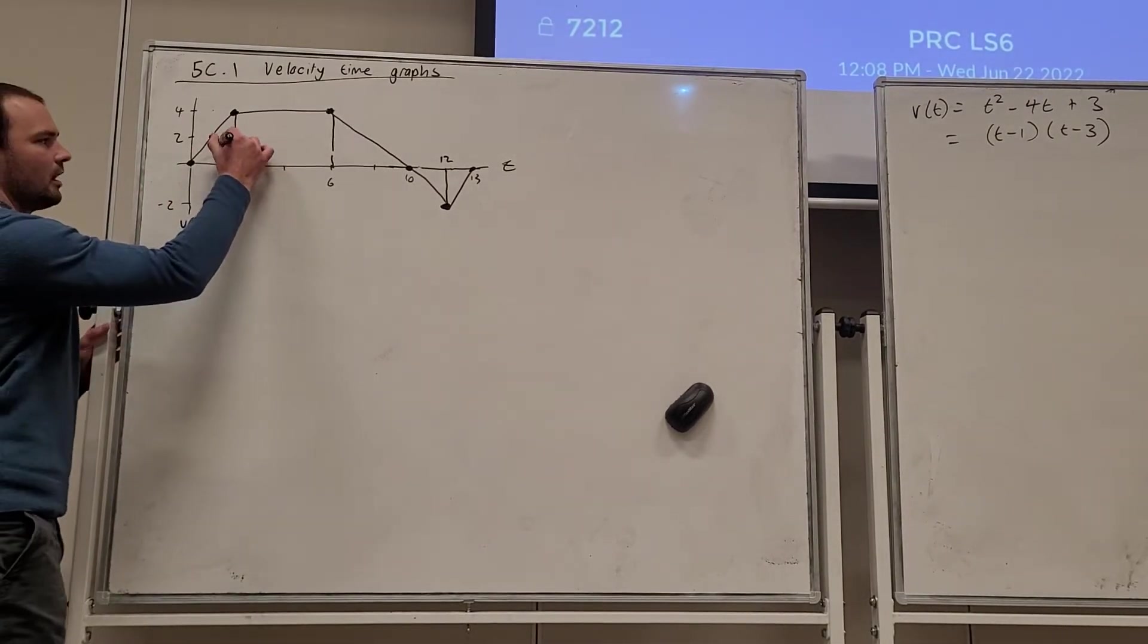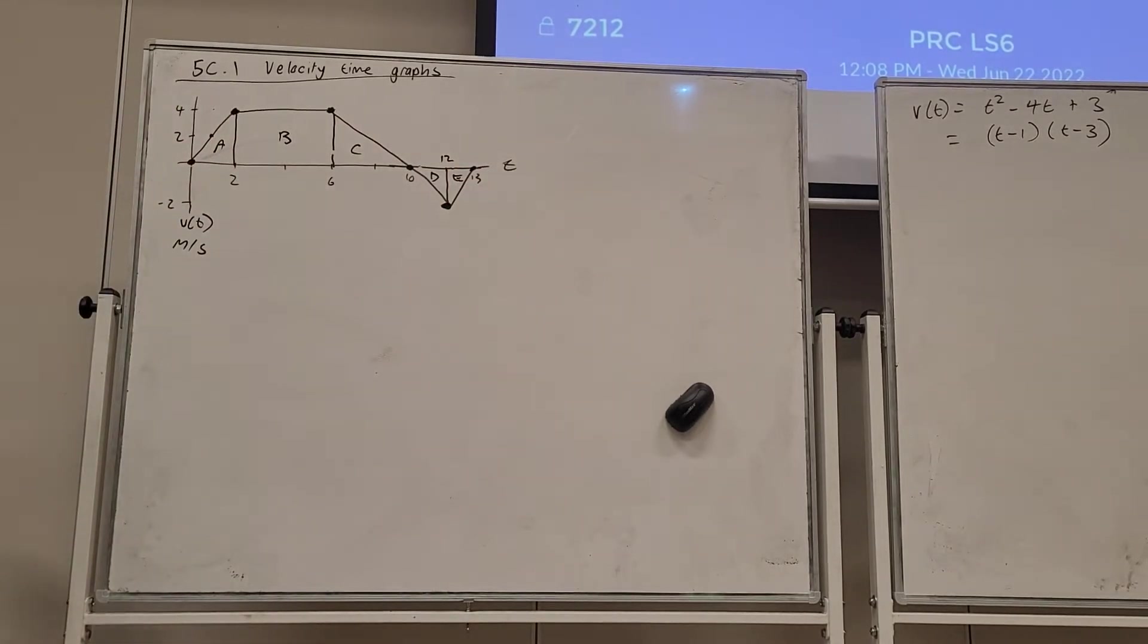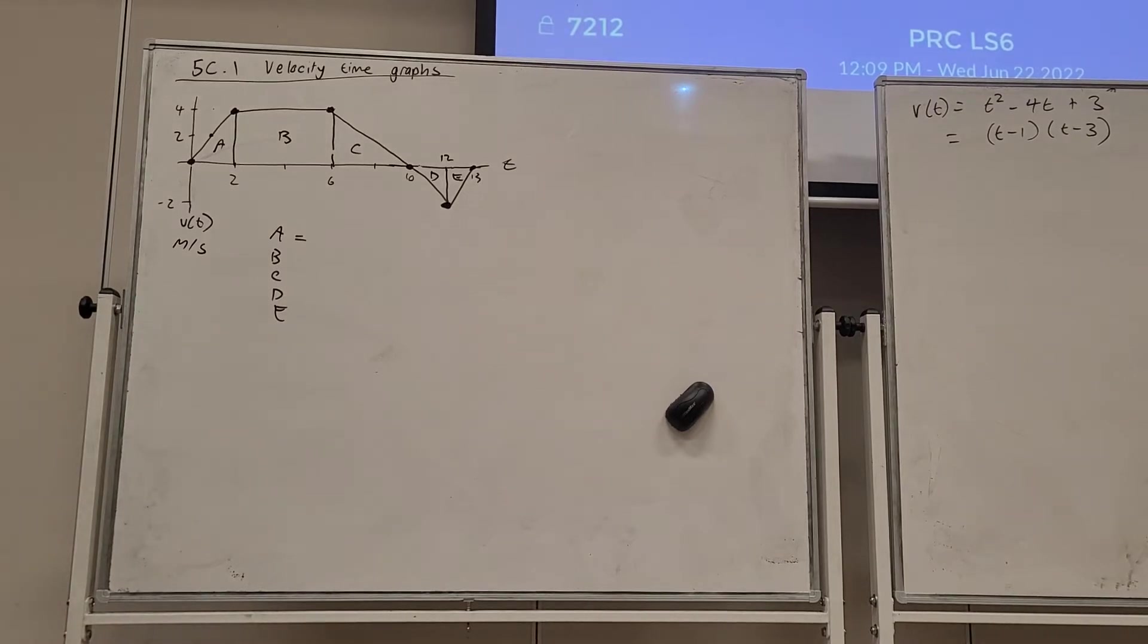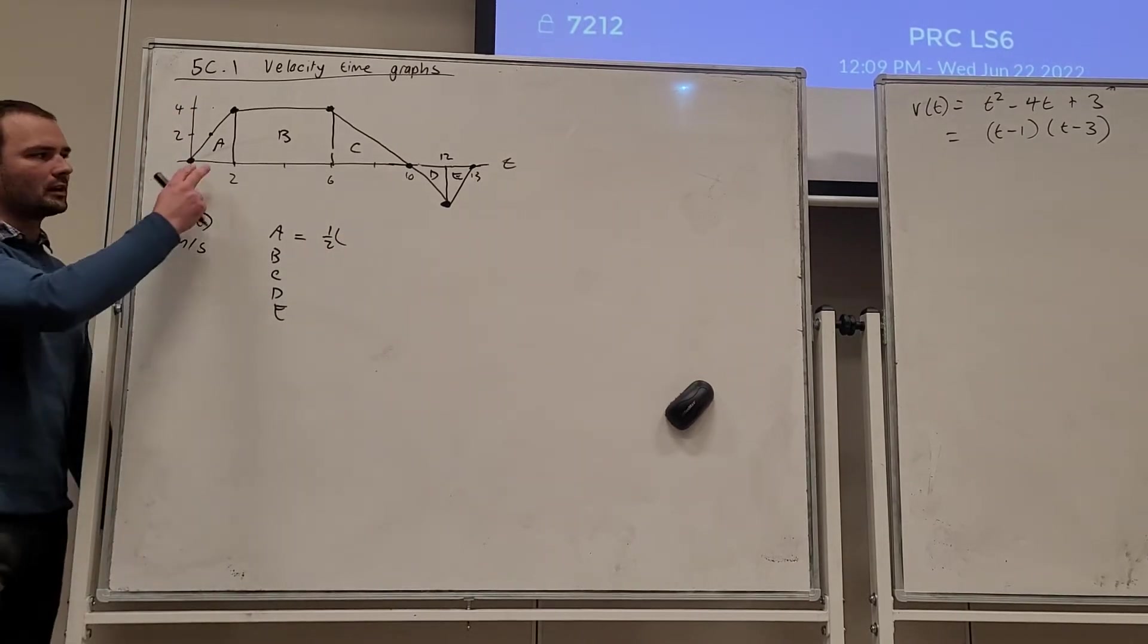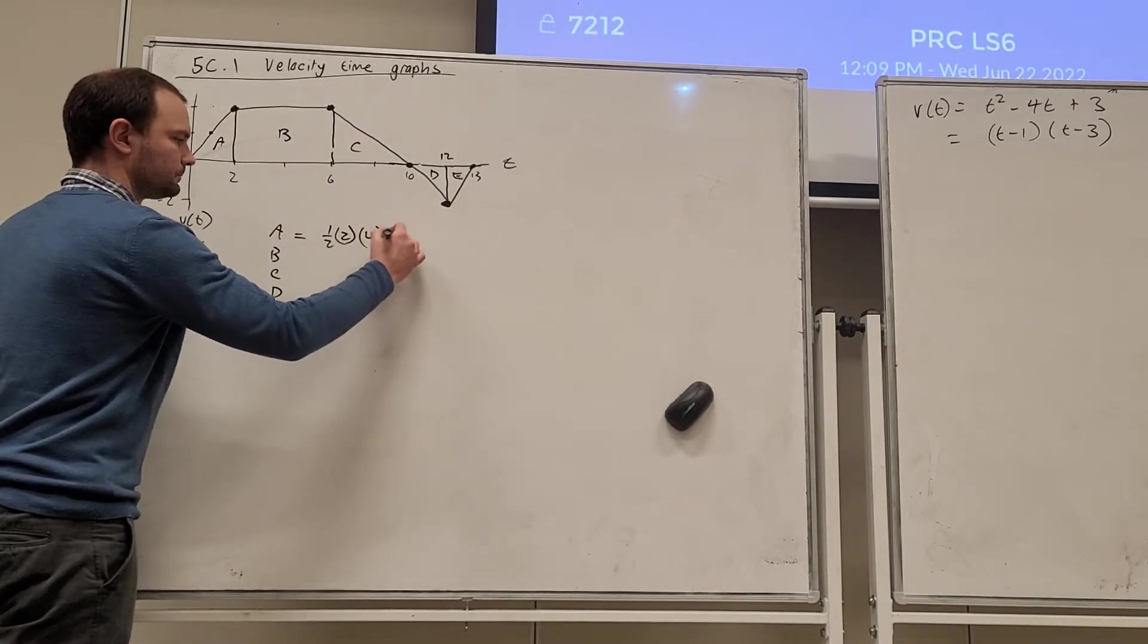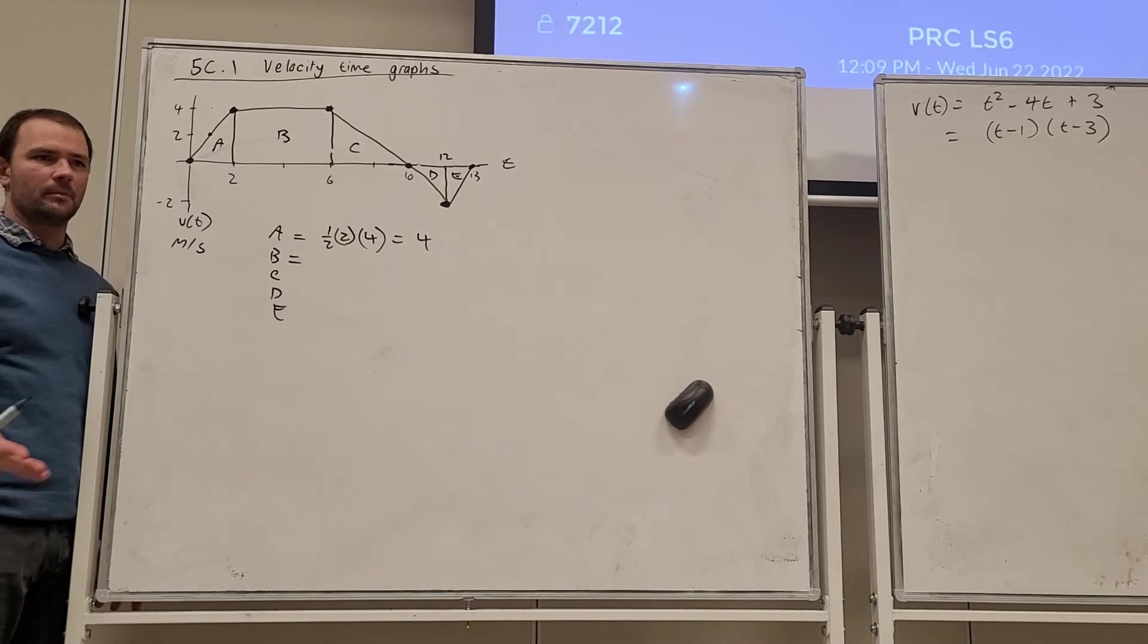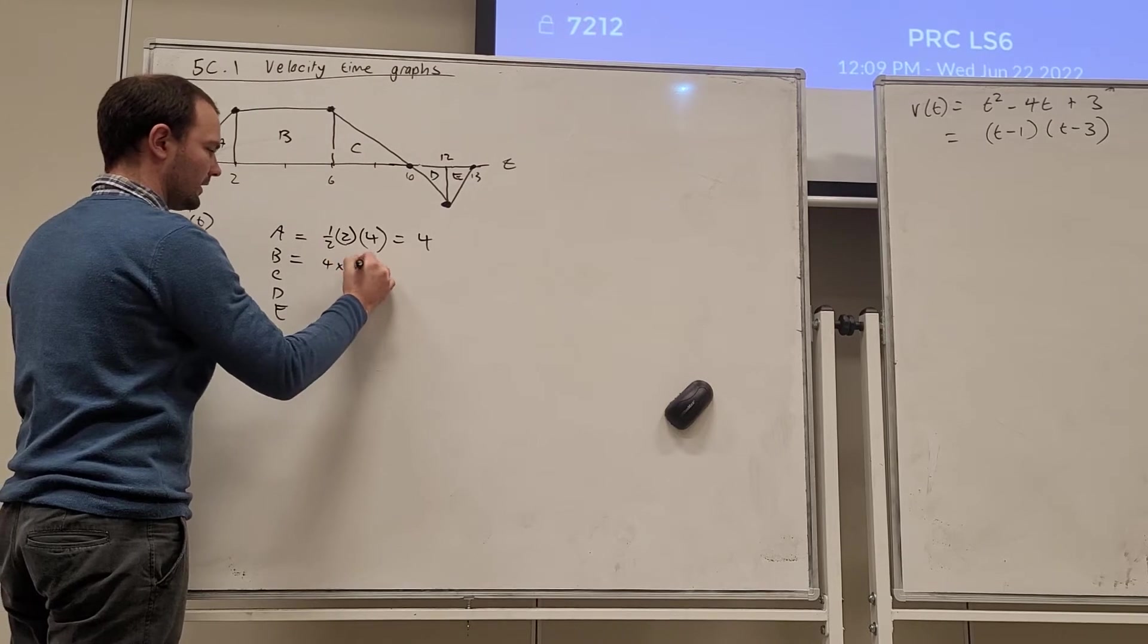So in order to determine the area, I'm just going to make a nice, clear mathematical argument by dividing this up into a number of components that are pretty easy to calculate the area of. And then we'll go ahead and do that. So when we consider A, area A is a triangle. So the area of a triangle is half times the base times the height. The base of this triangle is two units and the height of the triangle is four units. So that's going to be four. For B, it's a rectangle. And so the base of the rectangle is four. The height of the rectangle is four. So it has an area of sixteen.